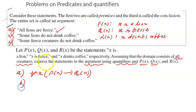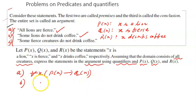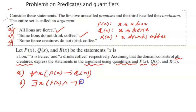The second statement is 'some lions do not drink coffee,' and a lot of students make mistakes here. The correct answer is: there exists x such that px and negation of rx — meaning there is some x that is a lion and does not drink coffee.